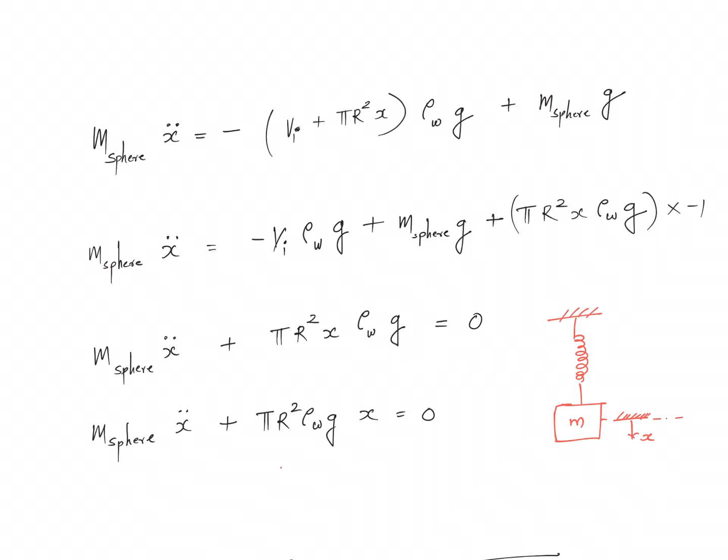I have told this many times. When we have an equation like m x double dot plus k x equal to zero, the natural frequency is governed by root k by m, and the units will be in radians per second, not in Hertz. You need to divide the quantity by 1 by 2π to get the frequency in Hertz. So now we have a very beautiful expression.